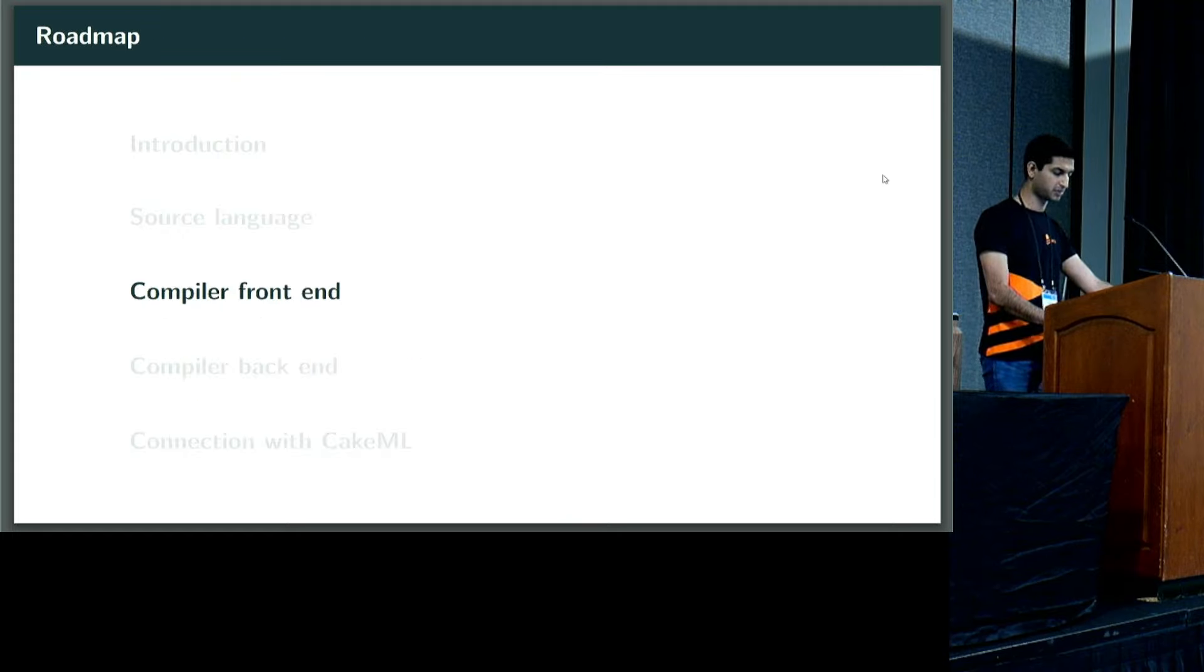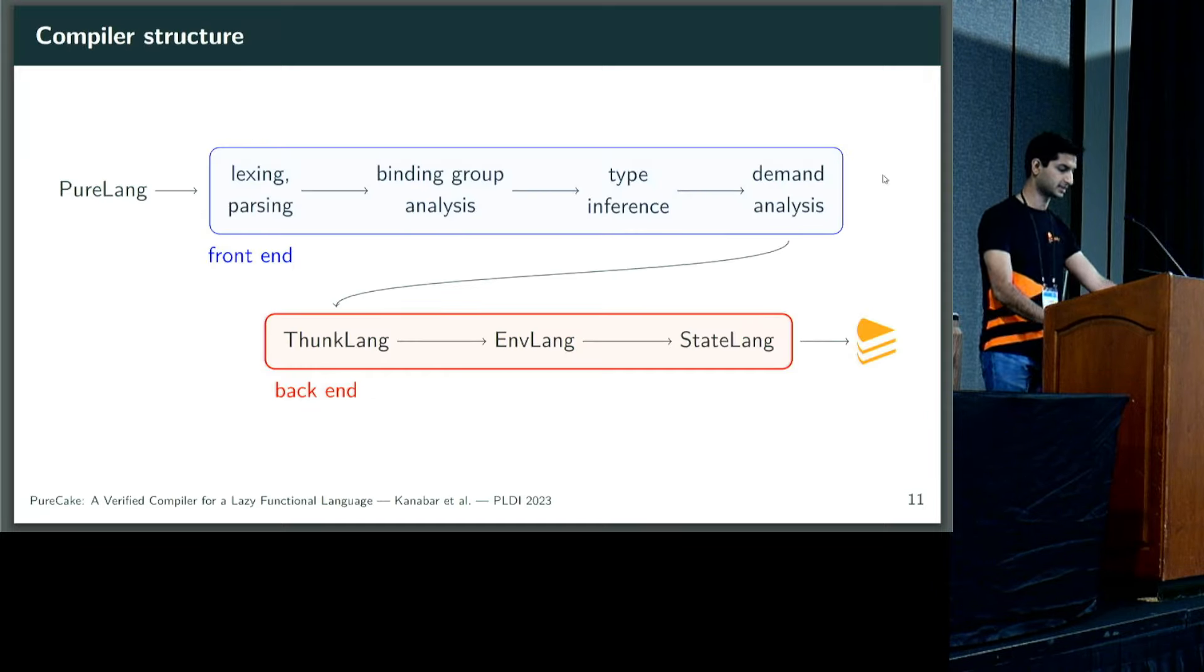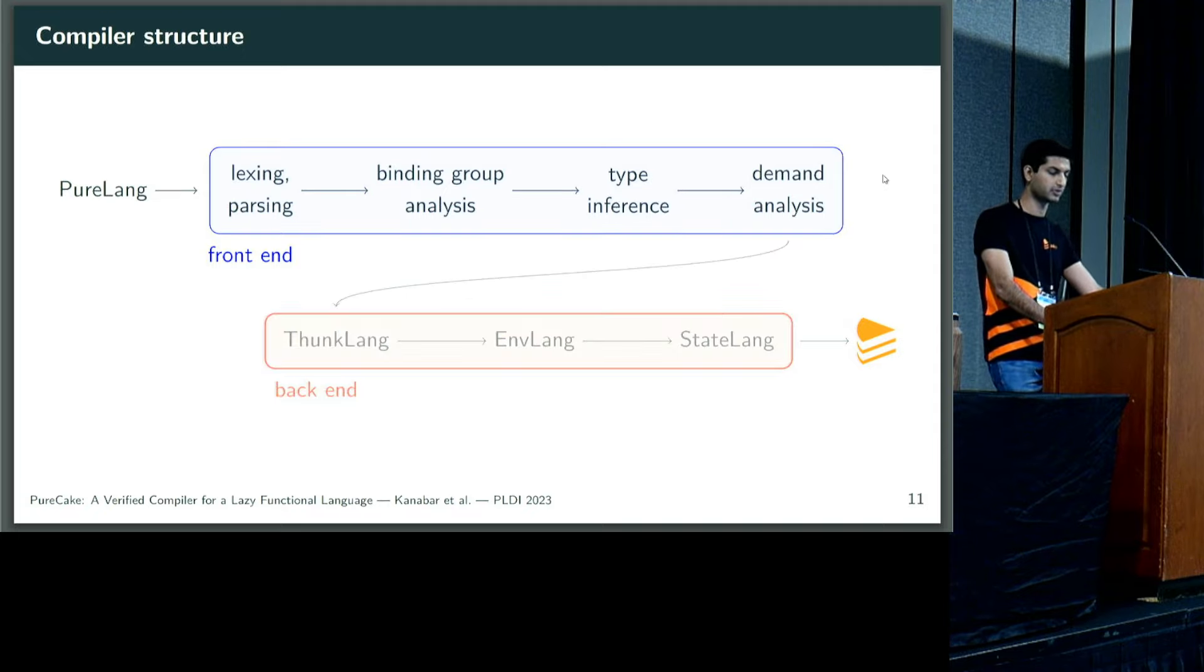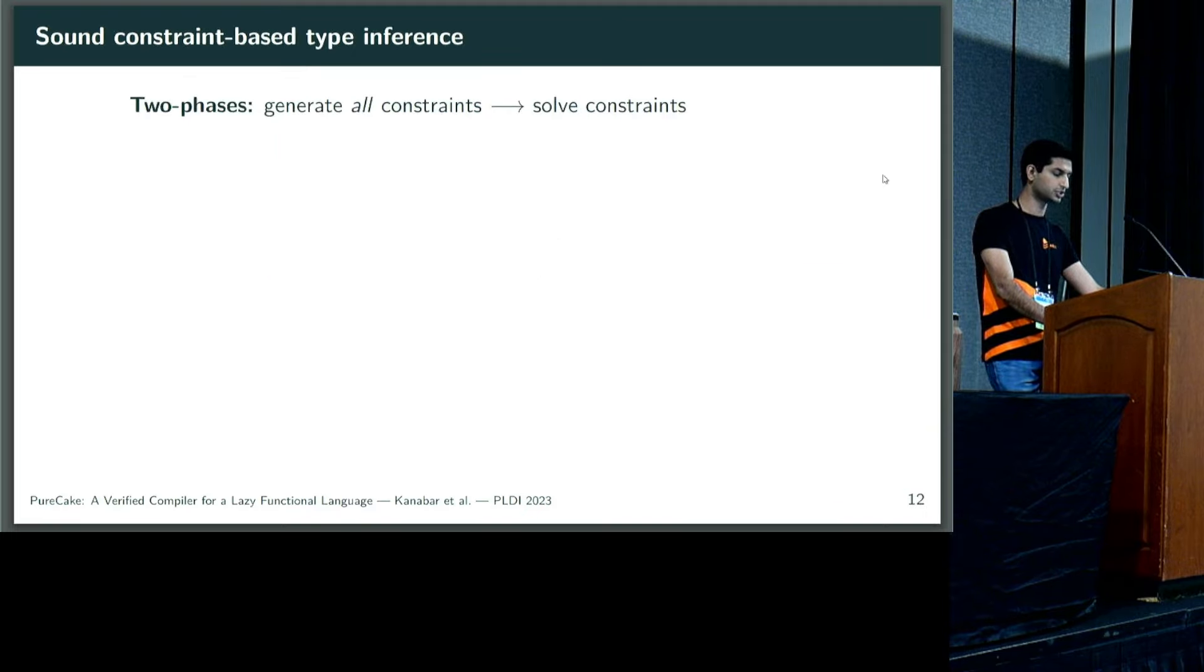Let's move now to the compiler itself, and it looks a bit like this. We accept PureLang on the left, go through the front end in blue, the back end in red, and then target CakeML at the end. We'll start by considering the front end, focusing on type inference and demand analysis.